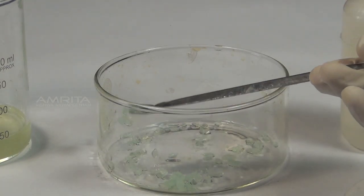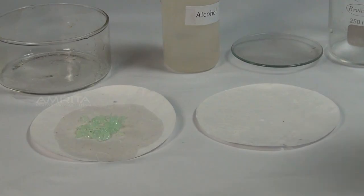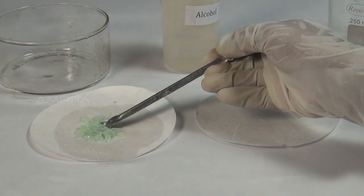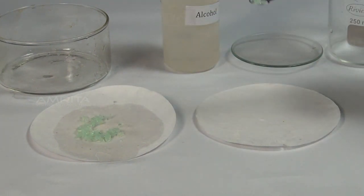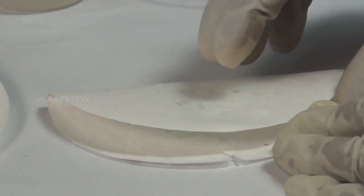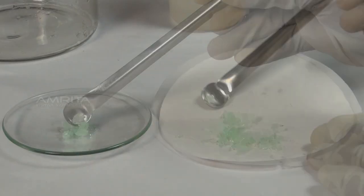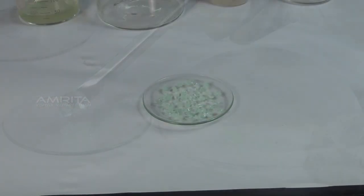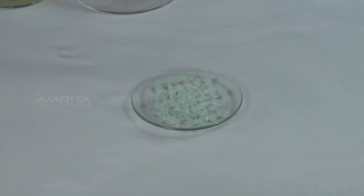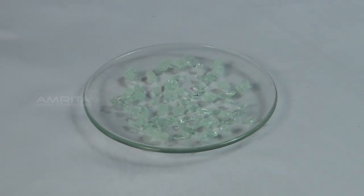Using the spatula, remove the crystals onto a filter paper which soaks the solution. Transfer the crystals onto another filter paper and dry them by pressing gently between the folds of the filter paper. Now transfer the crystals into a watch glass. The crystals of pure ferrous ammonium sulphate are pale green in colour and are monoclinic in shape.